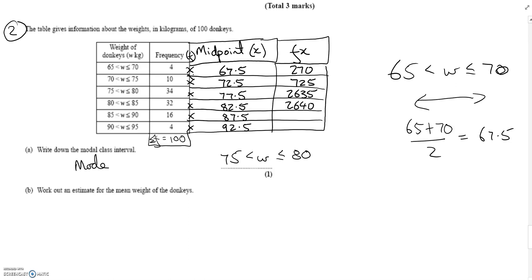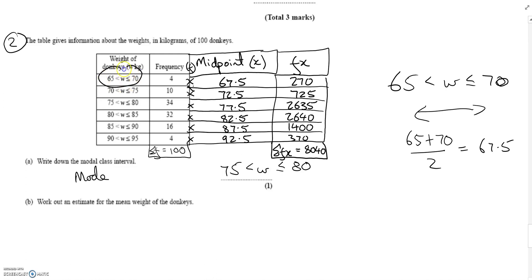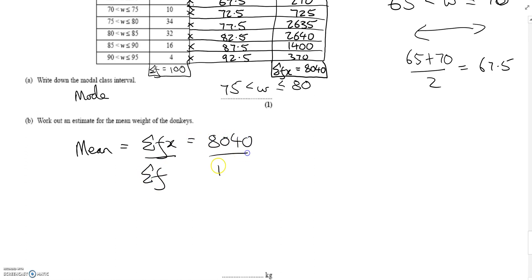Continuing: 34 times 77.5 is 2635; 32 times 82.5 is 2640; 16 times 87.5 is 1400; and 4 times 92.5 is 370. I'm multiplying along to get the total weight for each range. Then I add them all up for the sum of fx: 270 + 725 + 2635 + 2640 + 1400 + 370 = 8040. That's the estimated total weight of all 100 donkeys. The mean is 8040 divided by 100, the sum of f.